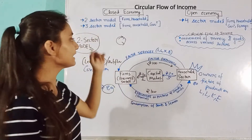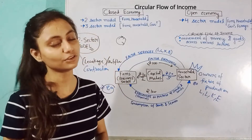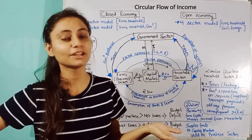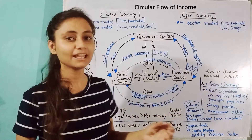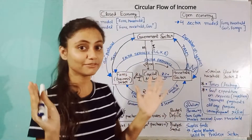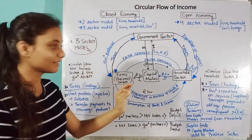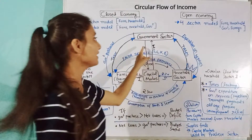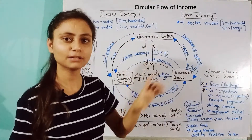Now we will see the three-sector model and how income circulates within it. Don't be scared by how complex it looks — it is actually quite easy. We still have the business sector and household sector, but now a third sector has been added: the government sector. We will see how the circular flow of income is maintained with this addition.